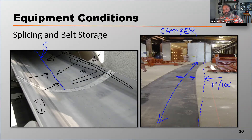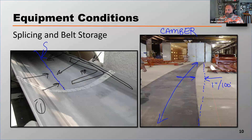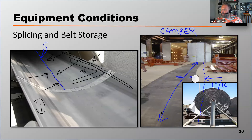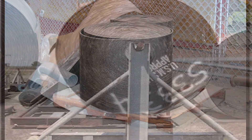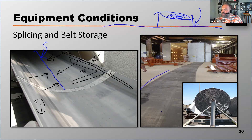Camber is a stretch on one side of the belt but not the other, and it can cause the belt to mistrack. That camber comes from storing the belt improperly. It's really important to store belts on a rack, as shown in the photo. What we don't want to do is store a belt on the ground — because when stored on the ground, all the weight is on one side of the belt, damaging that carcass, creating an elongation on one side, and causing the belt to mistrack.